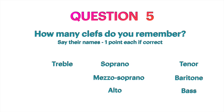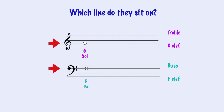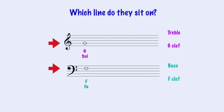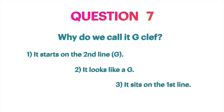Question 6: What is the other name of the treble clef? G clef. The treble clef starts on the second line where G is. The bass clef starts on the fourth line, and this is the line of F. Question 7: Why do we call it G clef? Because it starts on the second line — the line of G. Do you remember the first memo rhyme? Draw it from the second line, and the treble clef is fine.